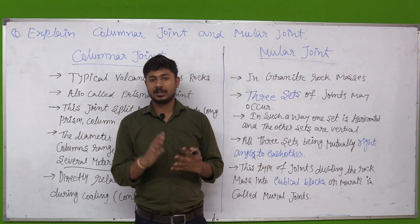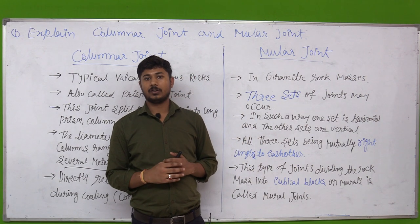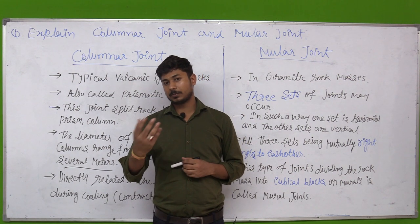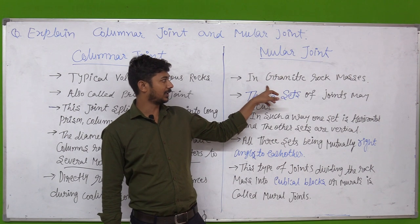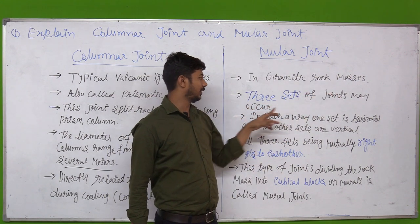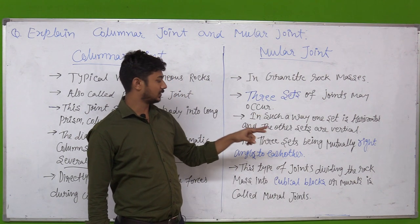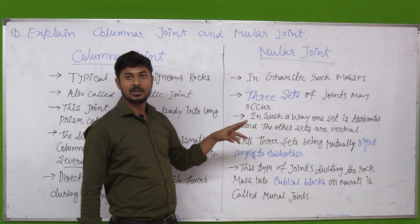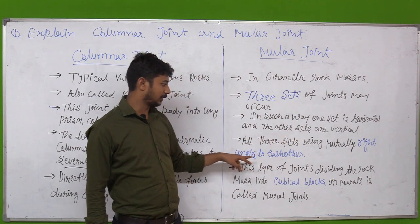The three sets of muller joints are mutually perpendicular or at right angles. One set is horizontal and the other two sets are vertical. All three sets being mutually at right angles to each other divide the rock into cubic blocks.